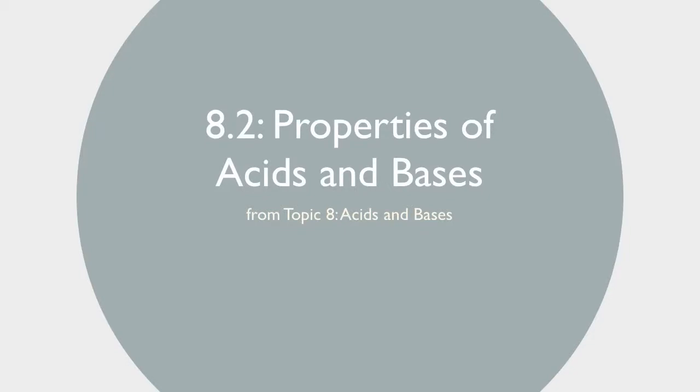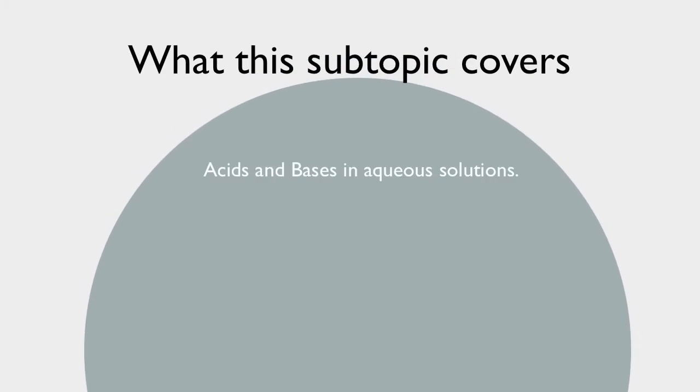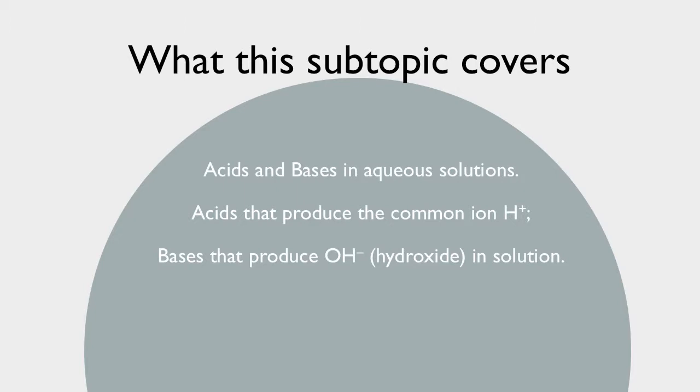This is subtopic 8.2, properties of acids and bases. We're going to talk about acids and bases in aqueous solutions. All Bronsted-Lowry acids produce the common ion, hydrogen plus. And bases in solution produce hydroxide, the common anion.